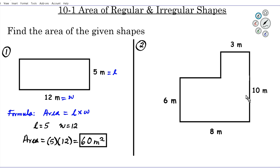There are two ways to break this up. I recommend breaking it in this direction — horizontally. When we do that, we get two rectangles. It's just like question one, done twice. Once we find the area of each rectangle, we simply add the areas together to find the total. This is rectangle one and this is rectangle two.